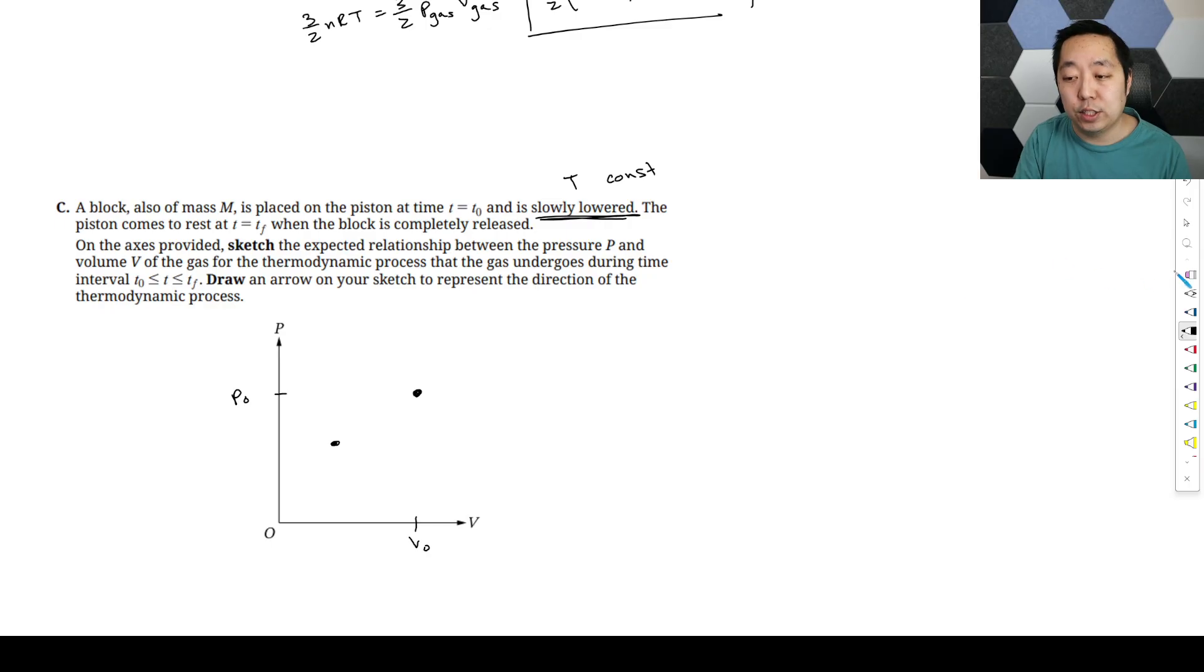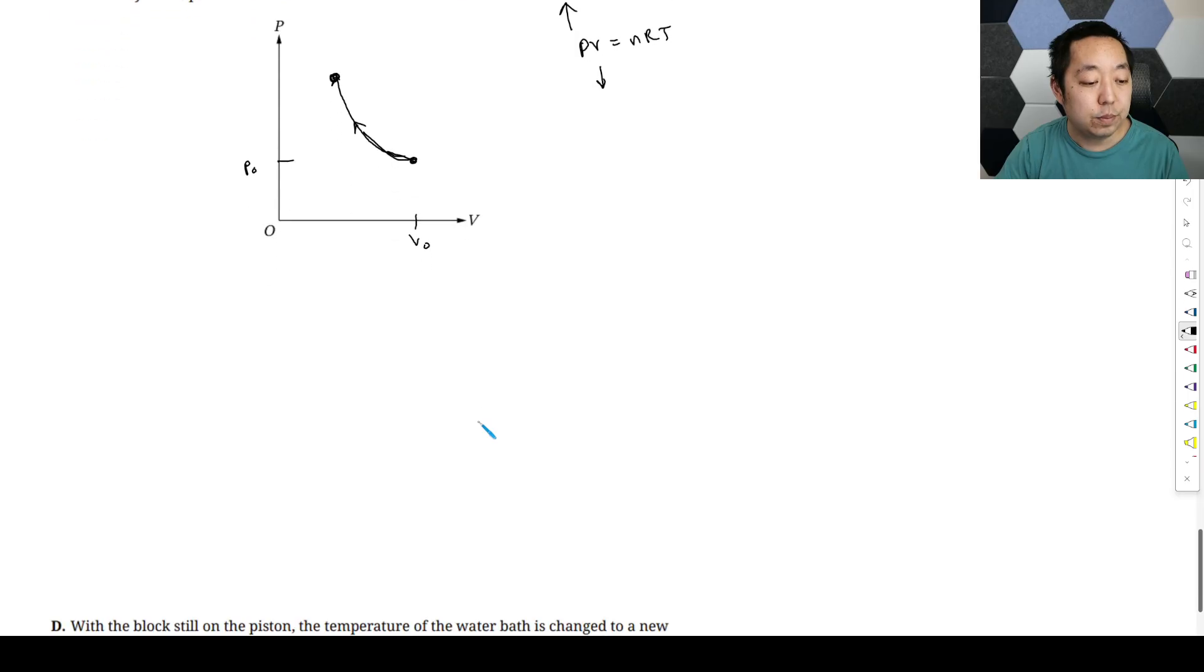The pressure is going to increase because if the temperature is constant, PV equals nRT, so the temperature is constant because it's got that water bath, so the volume is going to go down, so the pressure is going to go up. So I would probably put the P0 down here because I need to go up. We're going to start there, and then it's going to go up to another point in this direction like that. That is like one of those constant temperature or isothermal curves there.